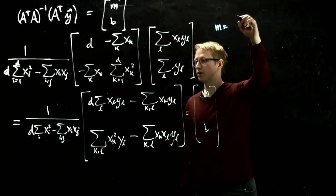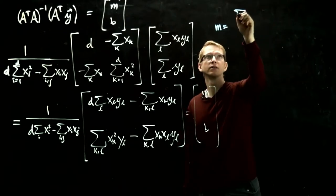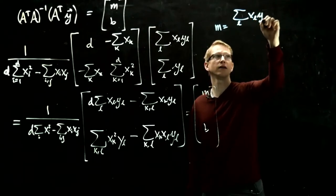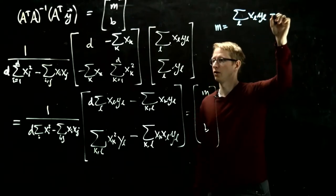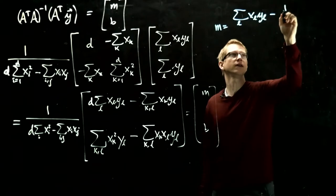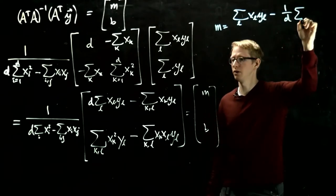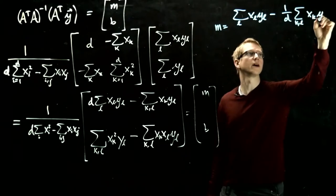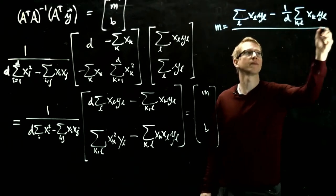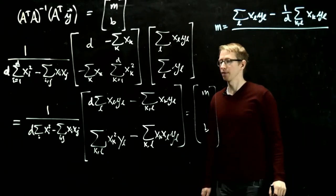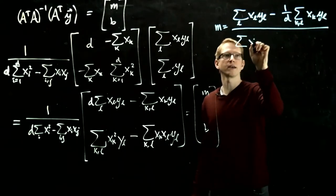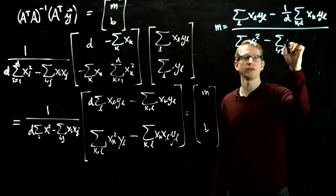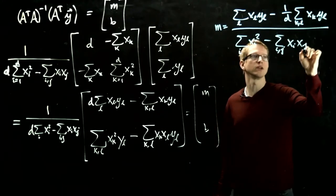Now does it equal anything familiar? If we look at m itself, and we divide the numerator and the denominator by d, we get that m equals sum over l, xl yl minus 1 over d sum k and l, xk yl, divided by xi squared minus ij xi xj.